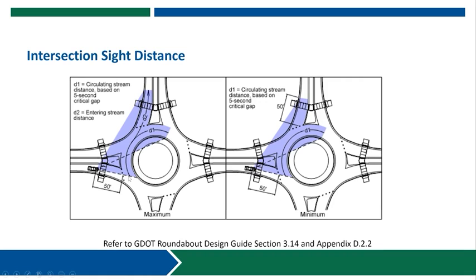One is the distance from our entry back around the circulatory roadway. The other is from the entry and then up the adjacent leg of the roundabout. For the D2 stream, we are considering the speed of the vehicles approaching the intersection and the speed of the entry as well as the speed circulating — so we're looking at the average of the R1 and R2 speeds for this conflicting through movement when evaluating the D2 distance.